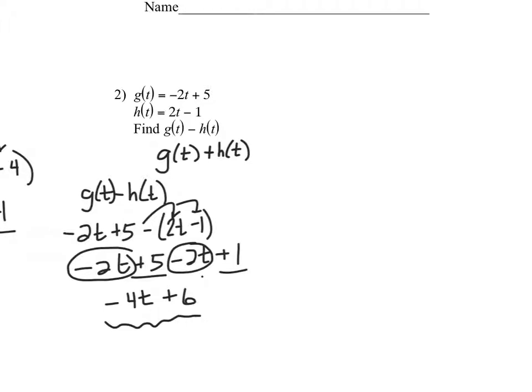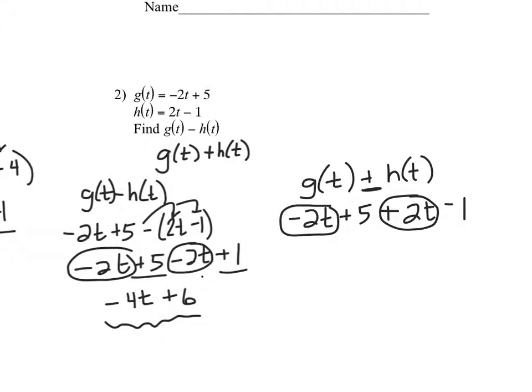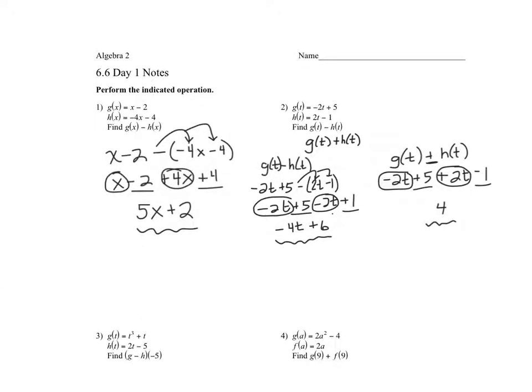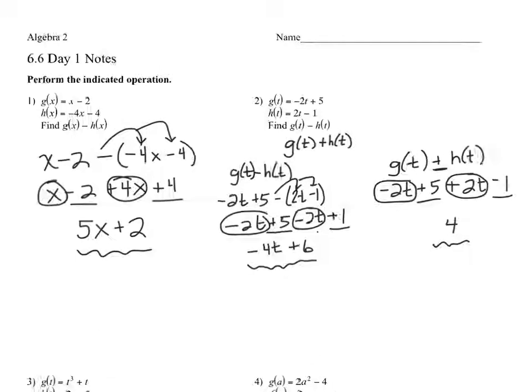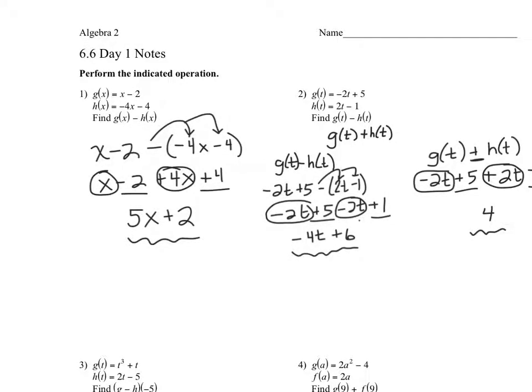Now, what happens if I want to add them? So I want to take g of t and I want to add h of t. Again, g of t is negative 2t plus 5. And we're going to add that to h of t, which is 2t minus 1. Notice, when I put addition, when I have an addition sign in the middle, I don't put parentheses, but when I have a subtraction sign, I do. So now it's all about combining like terms. There's no distributing to do. So these two guys, negative 2t and positive 2t make 0. Those guys are gone. Positive 5 and negative 1 is positive 4. This is my simplified answer for adding the two functions. We've got adding and subtracting functions here in function notation. You should be able to complete the first page here of your class kick examples.